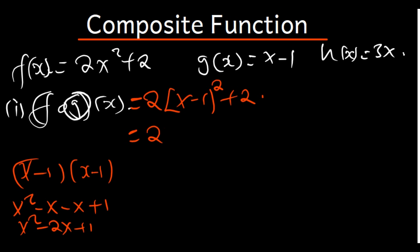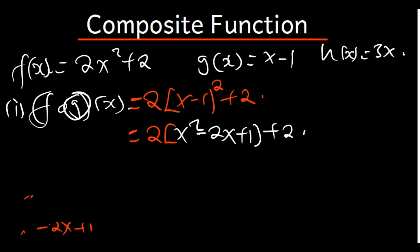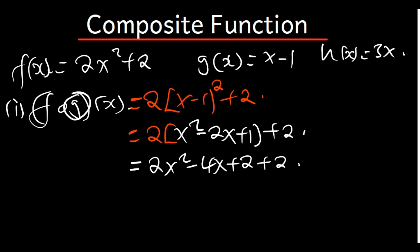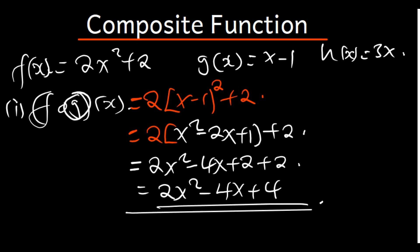So we are going to have 2 times (x² - 2x + 1) plus 2. Expanding: 2 times x² is 2x², 2 times -2x is -4x, and 2 times 1 is 2, then plus 2. So our final answer is 2x² - 4x + 4. This is the final answer of f of g of x.